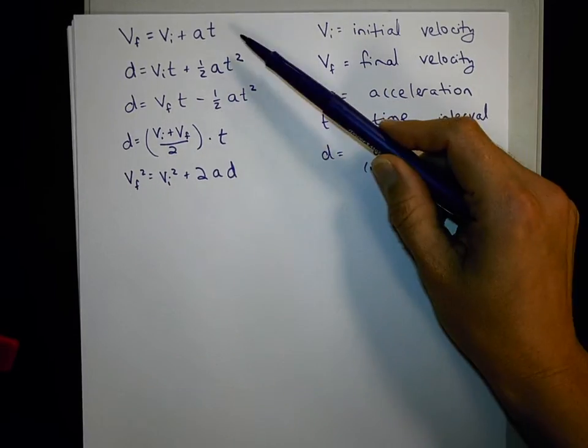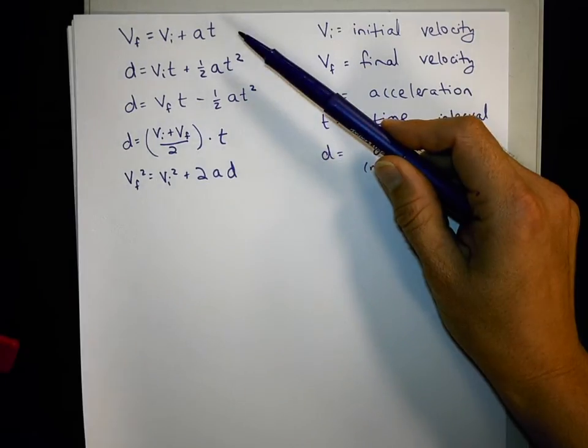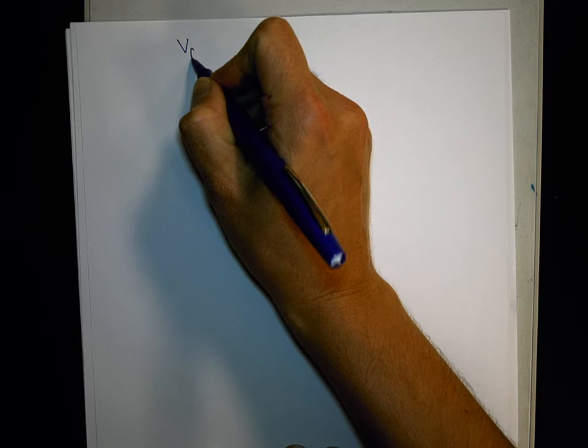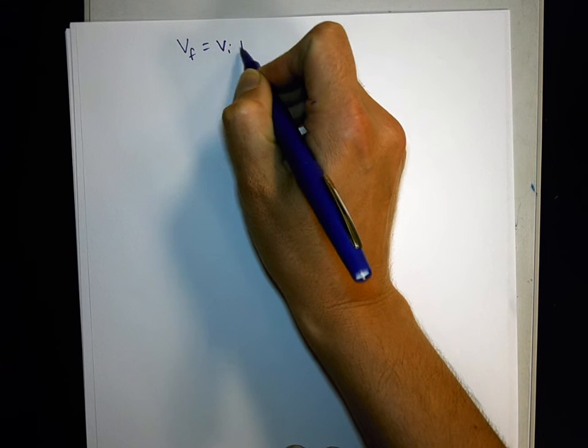So in this video we're going to derive VF equals VI plus AT. There are a couple ways we can do that. Again, this is what we're going for: VF equals VI plus AT.